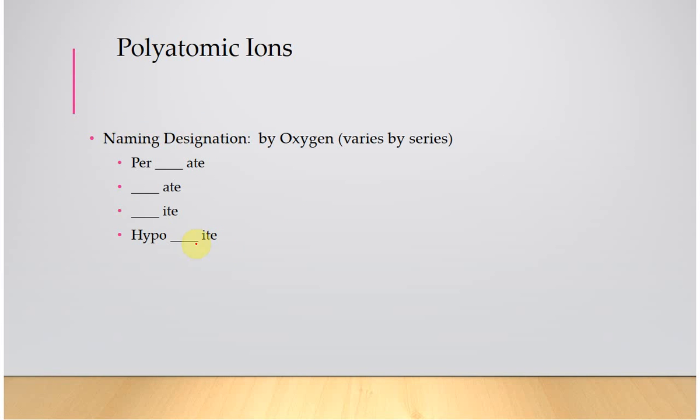So the trend or the rules is that you are going to name according to a series. So not all polyatomics contain a series, but if they do, the one with the absolute - it has to do with the oxidation number, which we talk about much later in the unit. But one of them is going to end with ate, the root of the first element's name and then ate.